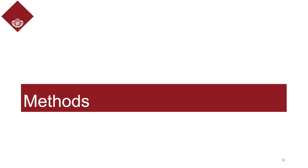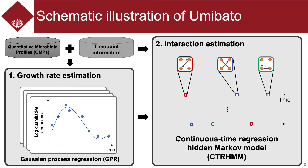The second section is methods. This is the schematic illustration of Umibato, which is proposed in this study. In the Umibato algorithm, we use quantitative microbiota profiles, QMPs, and time point information, which indicates when each profile was obtained. Umibato has two steps. The first step is the growth rate estimation using Gaussian process regression, GPR — we estimate gradients of logarithmic quantitative abundances. The second step is the interaction estimation using continuous time regression hidden Markov model, CTR-HMM, which is proposed in this study. Here we can estimate time-varying microbiome interactions.